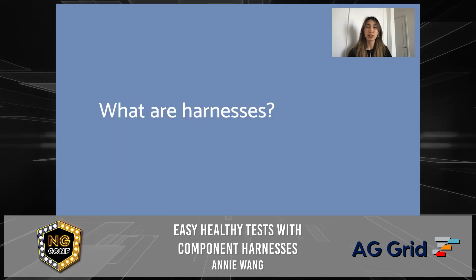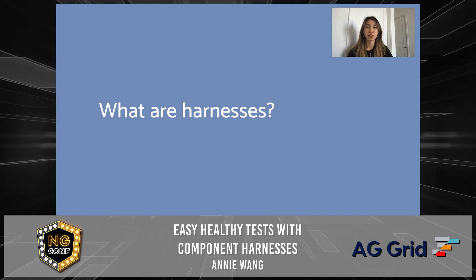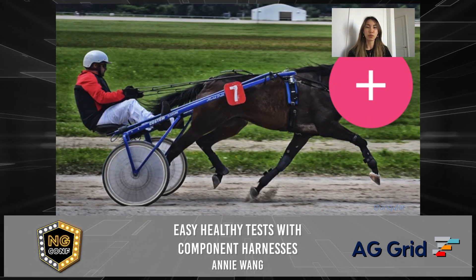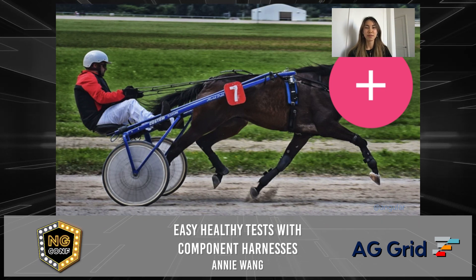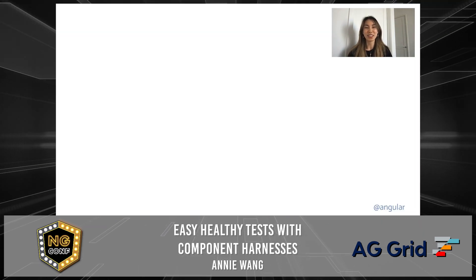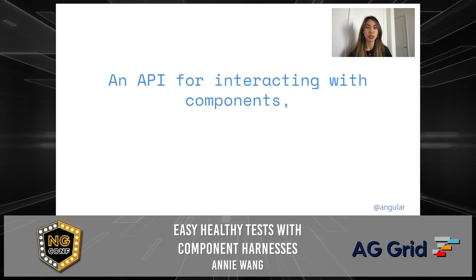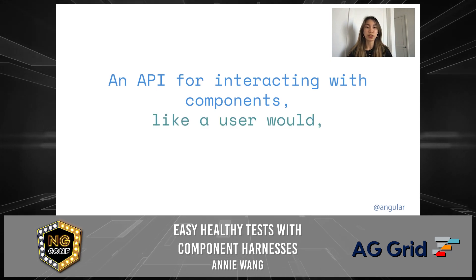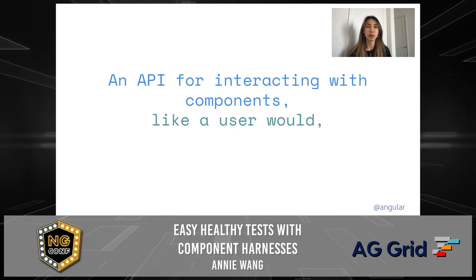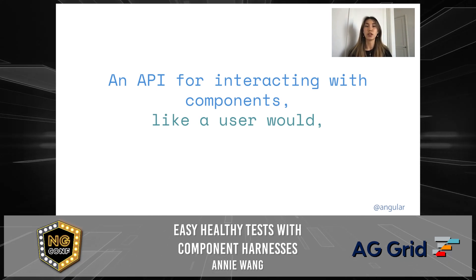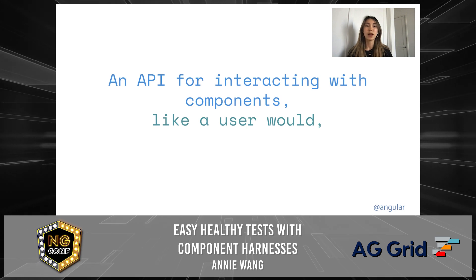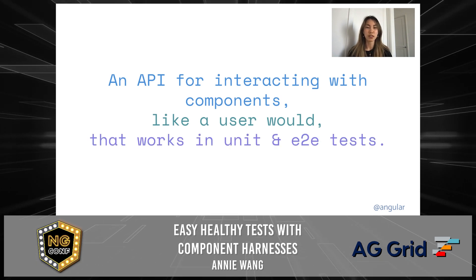So what exactly are component harnesses? Component harnesses is an API for interacting with components in tests, like a user would, and that involves clicking, typing, or general perceiving — like looking at the disabled state — but we're not checking any DOM structure or internal states. And this works in both unit and end-to-end tests.